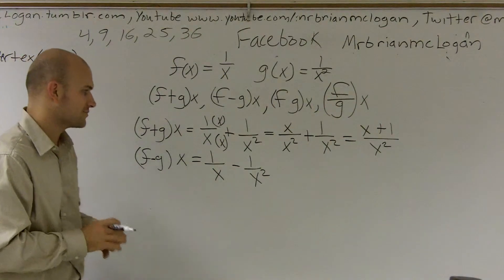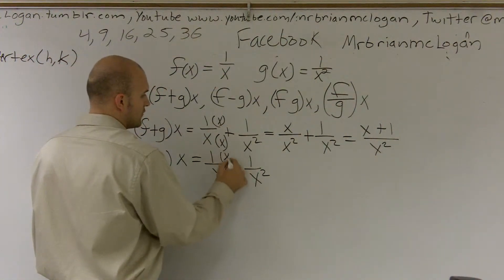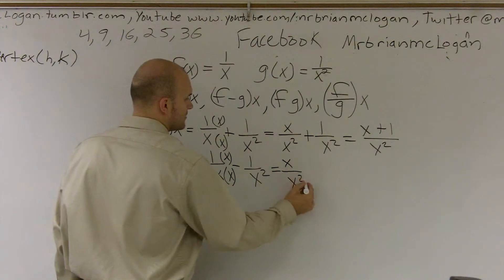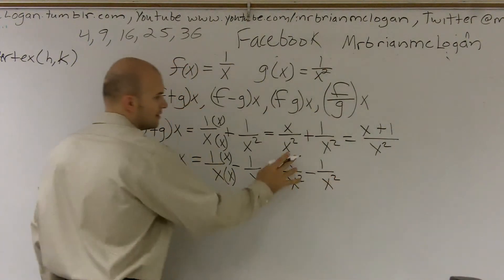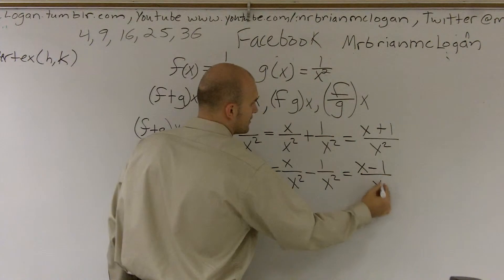So we have 1 over x minus 1 over x squared. To get to be the same denominator, I have to multiply by x over x. Therefore, I'll obtain x over x squared minus 1 over x squared. Therefore, my answer equals x minus 1 over x squared.